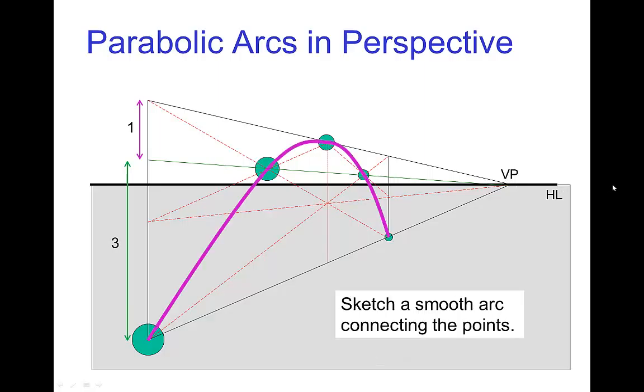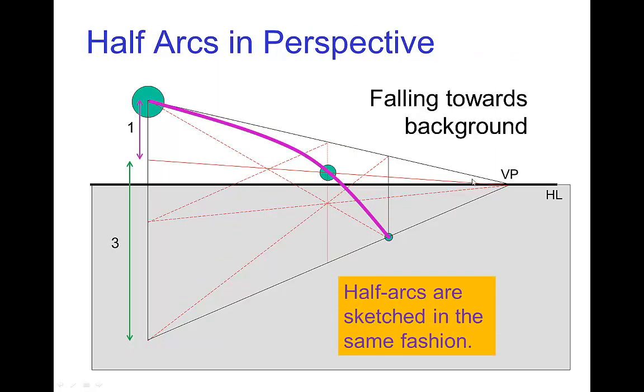And then we just finish and we sketch the arc. So this is not a great arc since PowerPoint doesn't have the best drawing tools in the world. But anyway, it's roughly a parabolic arc. And if we have a half arc, it's exactly the same procedure. So just locate the fourth down at half time point. And once you have that, then sketch in the arc.